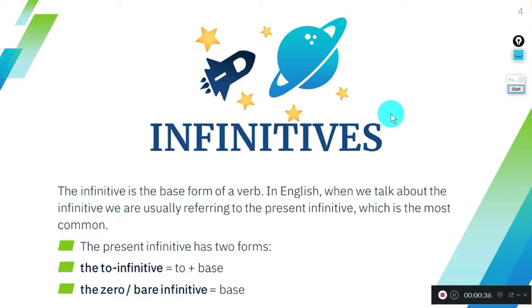Infinitives are the most common verbs in English. We use them almost all the time. So what is an infinitive? The infinitive is the base form of a verb. We have two types: the to-infinitive and the zero or bare infinitive. The to-infinitive is the verb accompanied by 'to', and the zero or bare infinitive is the verb in base form without 'to'.